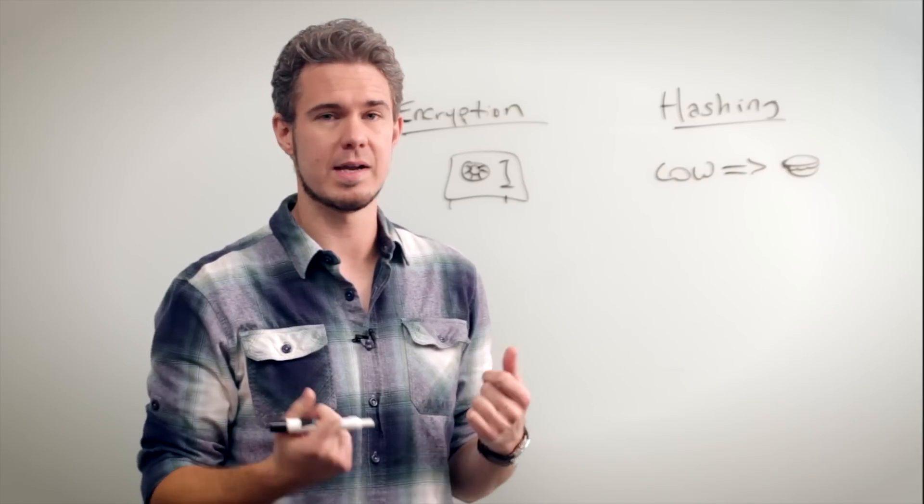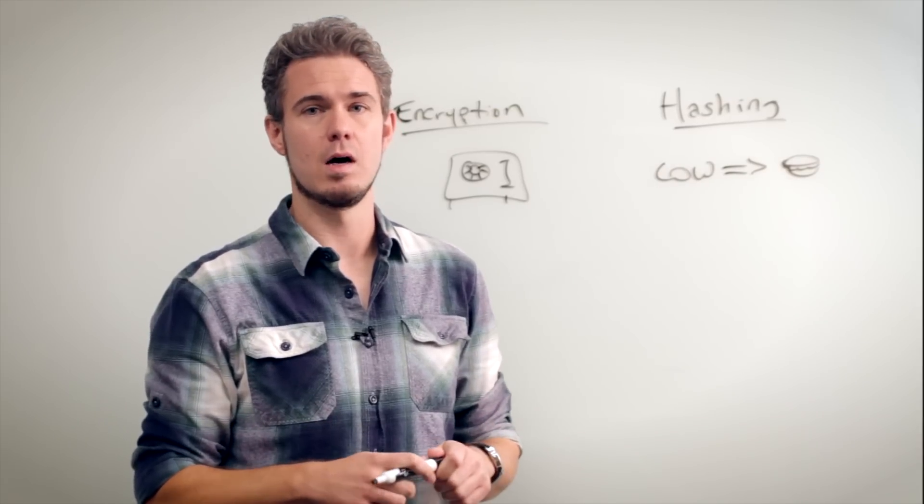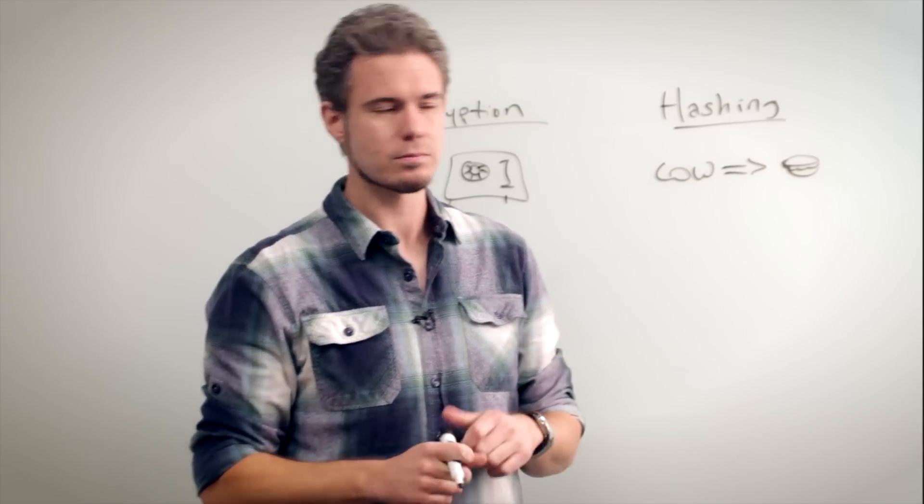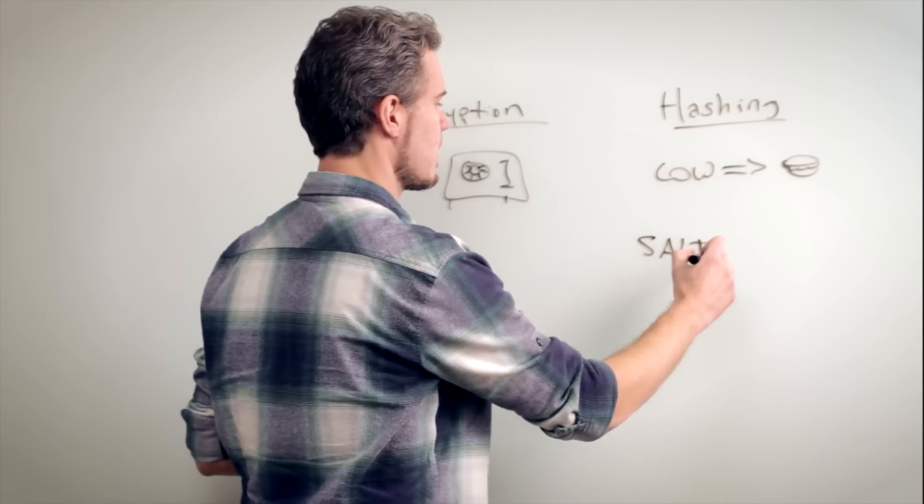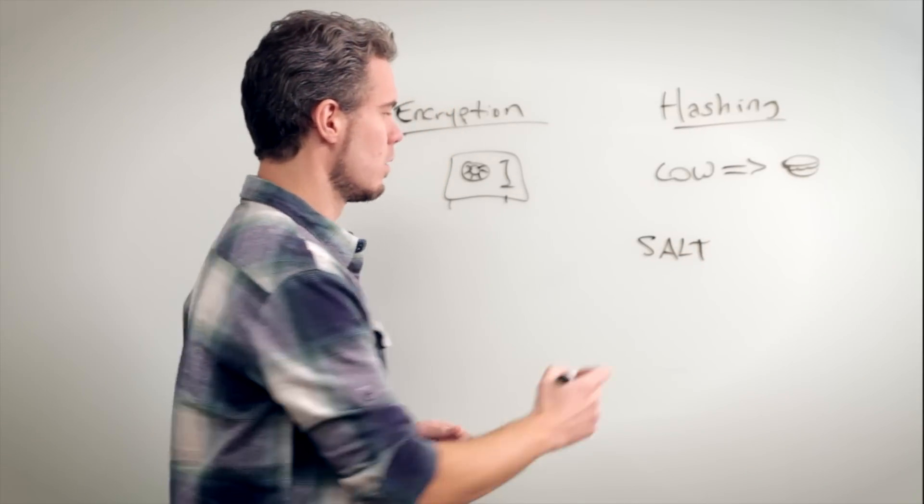So to get around that, to make it so hackers can't do that, we'll introduce something called a salt. Essentially all the salt is, is that it's going to be a random sequence of characters, so let's say about 128 characters, and when the user creates their password you will just randomly create a 128 character string.